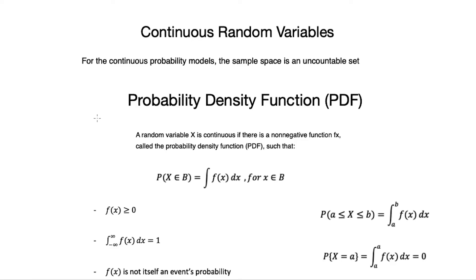Welcome to this lecture on continuous random variables. The difference between continuous and discrete random variables is the sample space. In the discrete case, the sample space is countable. In the continuous case, the sample space is uncountable. For discrete random variables, we define a PMF, or probability mass function, for each random variable X.